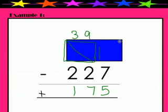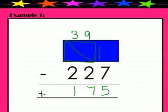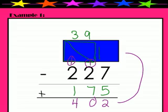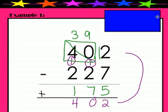We'll go ahead and add to check that our subtraction was correct. I'll cover up that top number. Seven plus five is 12. Carry our one — circle it so I don't forget about it. One, two, and seven is ten. One, two, and one is four. If these two numbers match, we know that we did our subtraction correctly. Sure enough, we did, so we're good to move on.